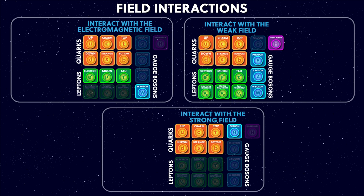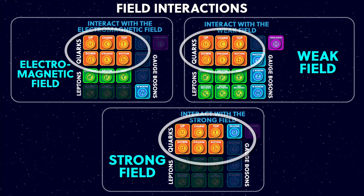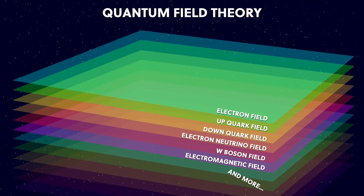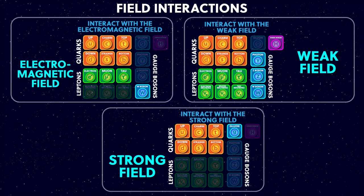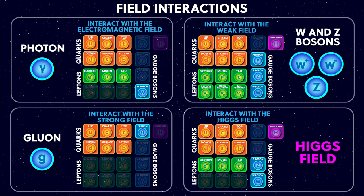Quarks interact with all of the fundamental forces. Each diagram shows which particles interact with each of the fundamental forces — the electromagnetic force, the strong force, and the weak force. So you can see that the quarks interact with all of these forces. The quarks are the only particles that feel the strong force, along with the carriers of the strong force, the gluons. This comes from quantum field theory, which states that there is a field associated with each of the fundamental particles, and particles are really excited states — also known as quanta — of their field. We also need to add the Higgs field, which doesn't cause a force, but these particles get their mass from interacting with it.